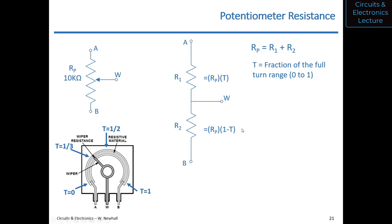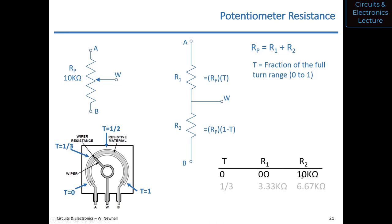Let's create a table. At T equals zero, the wiper is at terminal A, so R1 equals zero and R2 equals 10 kilohms. At T equals one third, R1 is 3.3 kilohms and R2 is 6.6 kilohms. At T equals one half, both resistances are equal at 5 kilohms. At T equals one, all the resistive material is between A and W, so R1 is 10 kilohms and R2 is zero. That's how a potentiometer works.